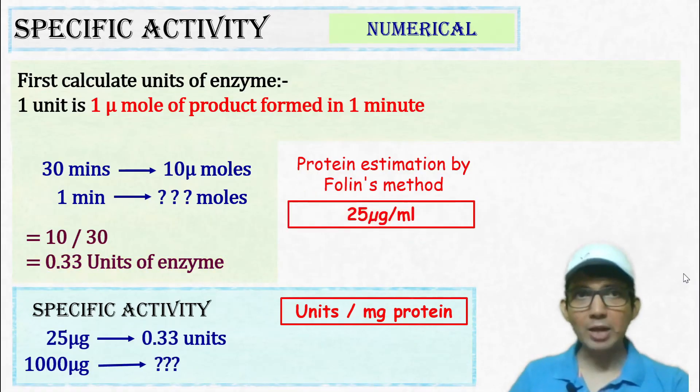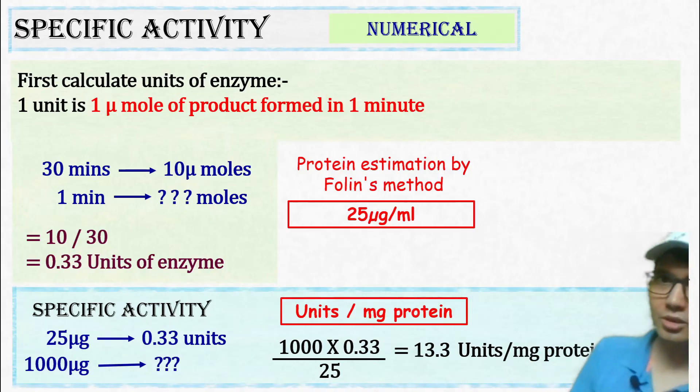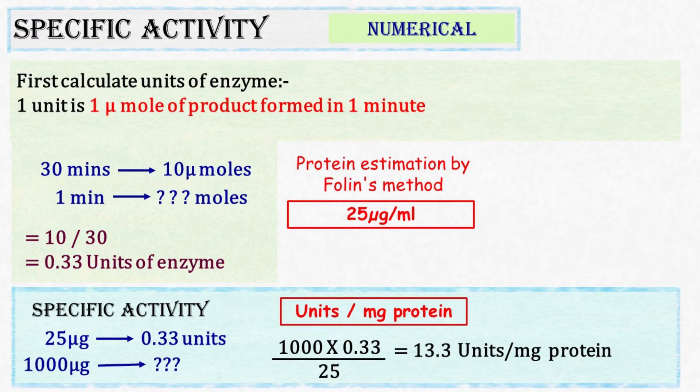So, 1000 micrograms which is equal to 1 mg will have how many units? The calculation will be 1000 multiplied by 0.33 divided by 25. This gives 13.3 units per milligram of protein, since 1000 micrograms equals 1 mg.